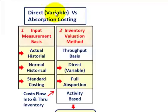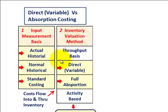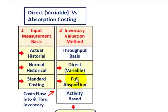What we're going to cover here is direct costing, also referred to as variable costing, versus absorption costing. These are two different inventory valuation methods used in cost accounting. We're going to compare direct or variable costing — those terms are interchangeable — to absorption costing, also called full absorption costing.